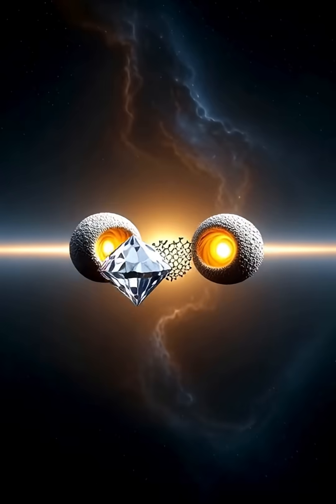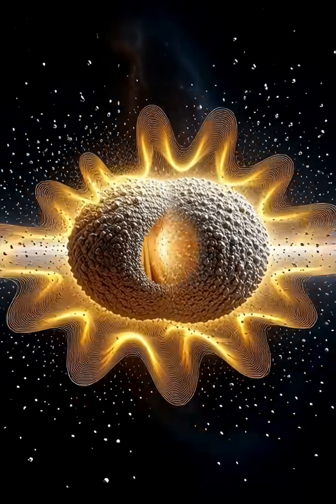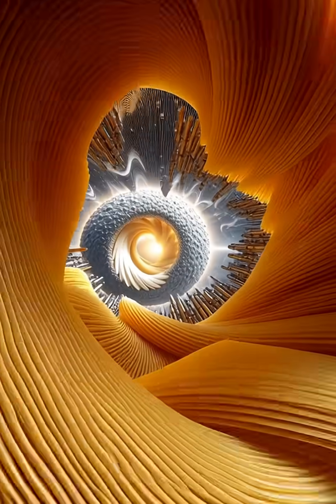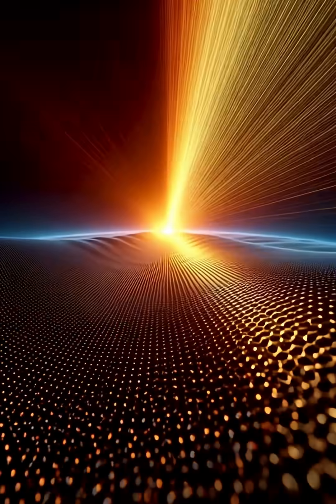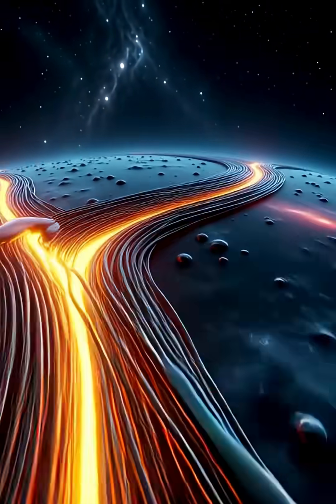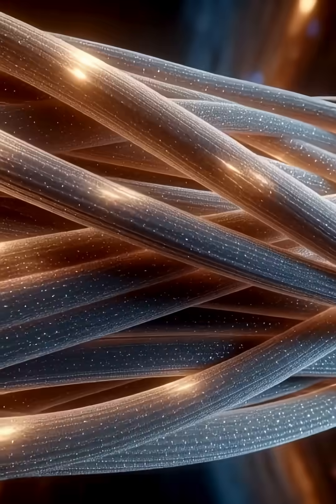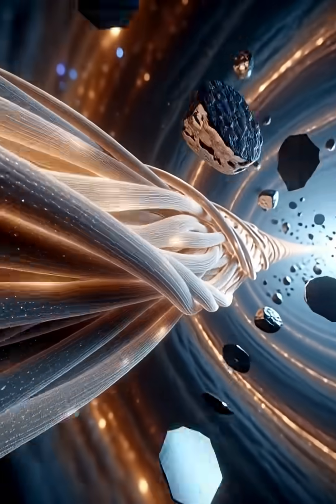That's why scientists consider it the strongest material ever discovered in the universe. Inside neutron stars, this material forms in different patterns: long spaghetti-like strands, layered sheets, and dense blocks.